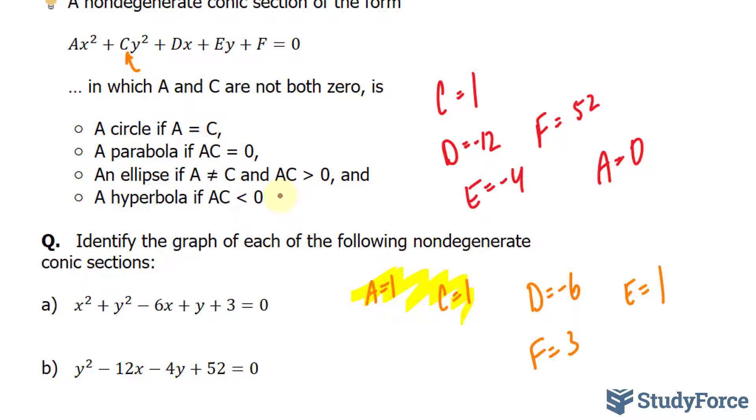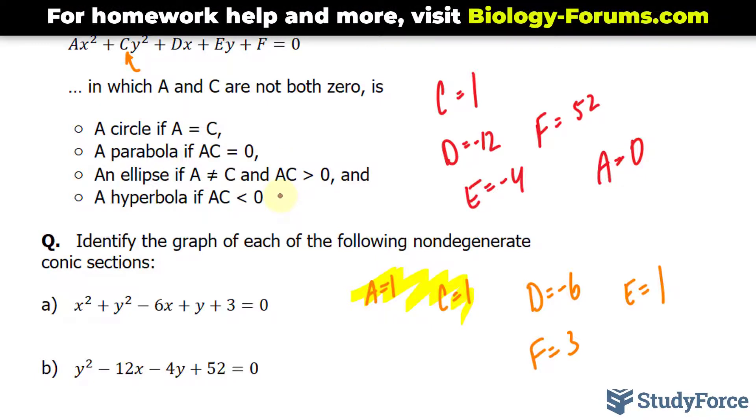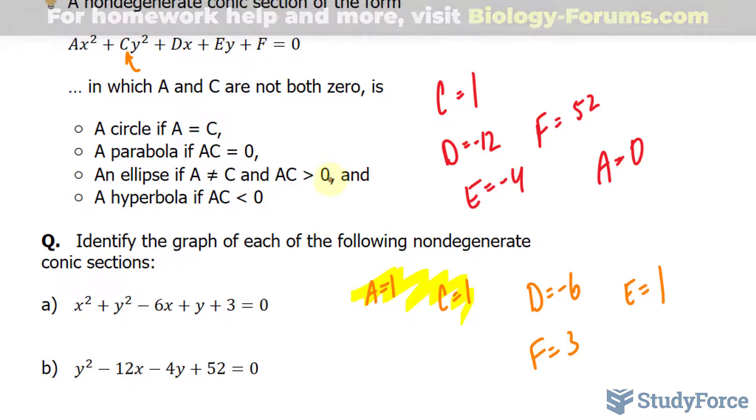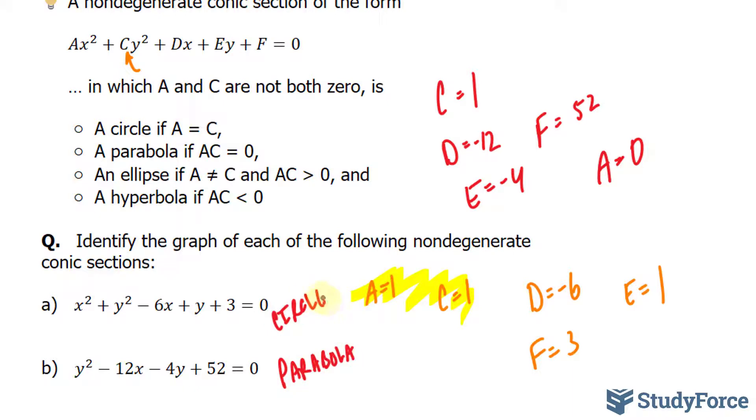If AC > 0, then it's an ellipse. Given that AC = 0, that's not the case, so it can't be an ellipse. Let's see if it's a parabola. AC = 0, and that's the case, so this is a parabola.